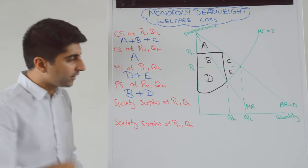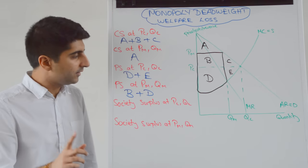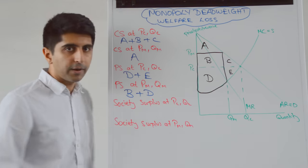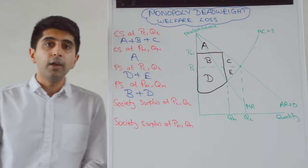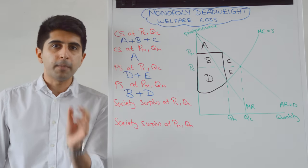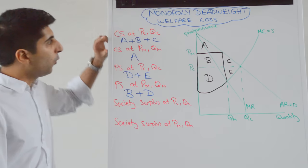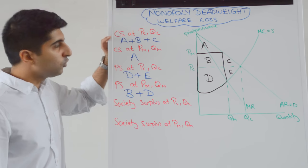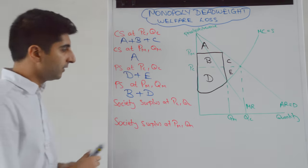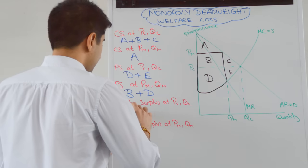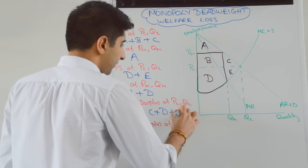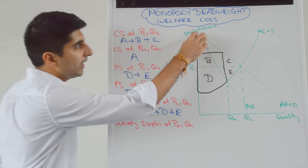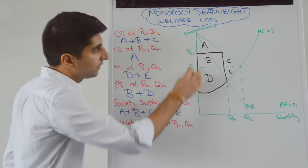Okay, so now we want to compare society surplus at competitive outcomes compared to society surplus at monopoly outcomes, where society surplus is the sum of consumer and producer surplus. Well at competitive outcomes, consumer surplus plus producer surplus was area A plus B plus C plus D plus E. So this entire area represented society surplus.